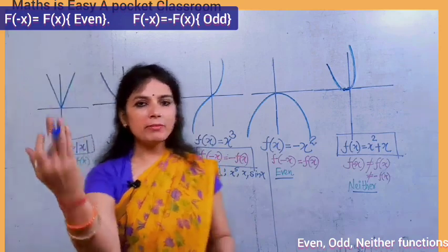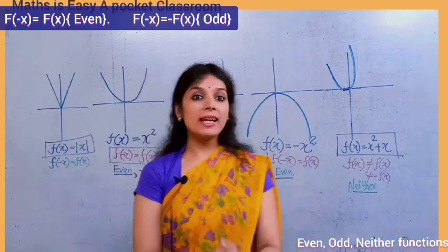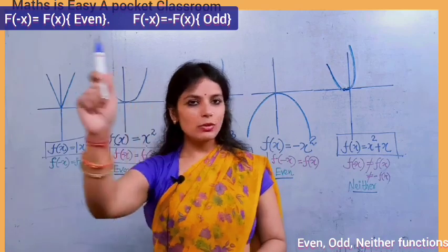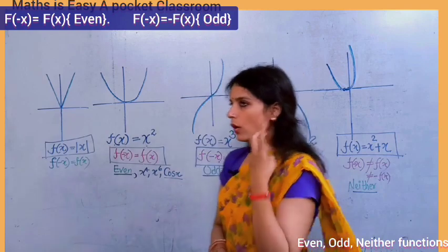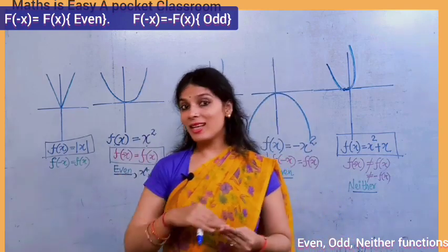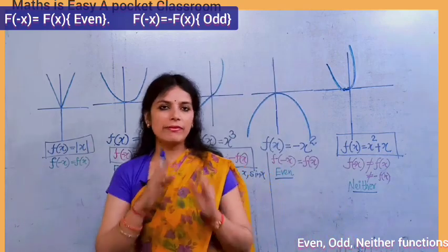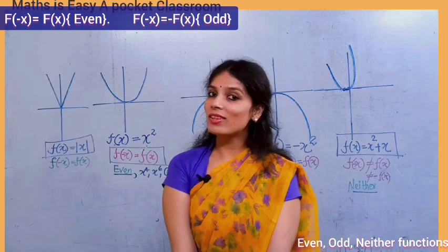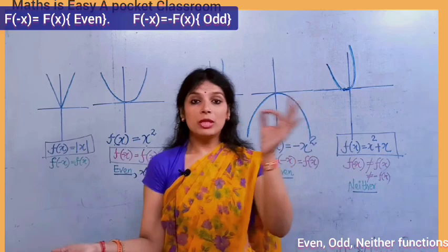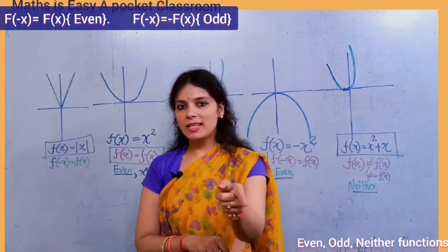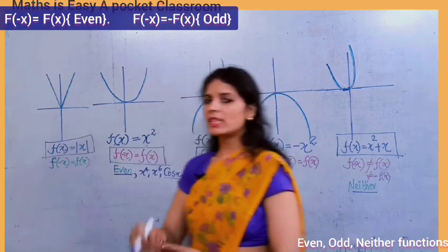Not only even powers of x, but cos(x) is also an even function because cos(x) has the well-known property that cos(−x) = cos(x). Also, |x| (mod x) is an even function because it gives the same value when x is replaced by minus x. So mod x, cos x, and all even powers of x are even functions.